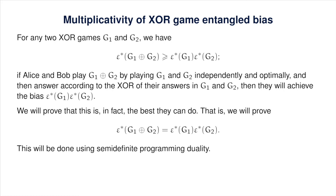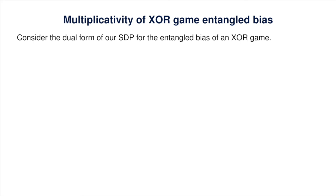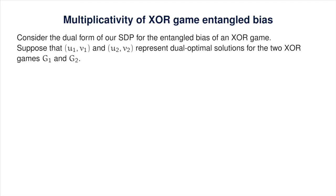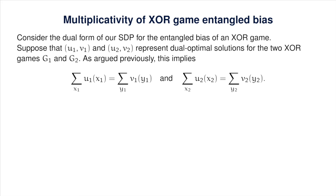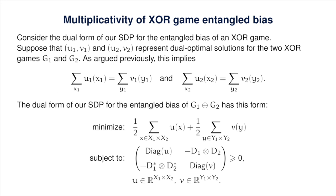Consider the dual SDP for G₁ and G₂ with (U₁, V₁) optimal for G₁ and (U₂, V₂) optimal for G₂. Since these are optimal, the sums of entries of U₁ and V₁ agree, as do those of U₂ and V₂. The dual SDP for G₁ XOR G₂ features D₁ ⊗ D₂ in the off-diagonal blocks, where D₁ and D₂ are defined by G₁ and G₂—which follows from the definition of the XOR of XOR games.